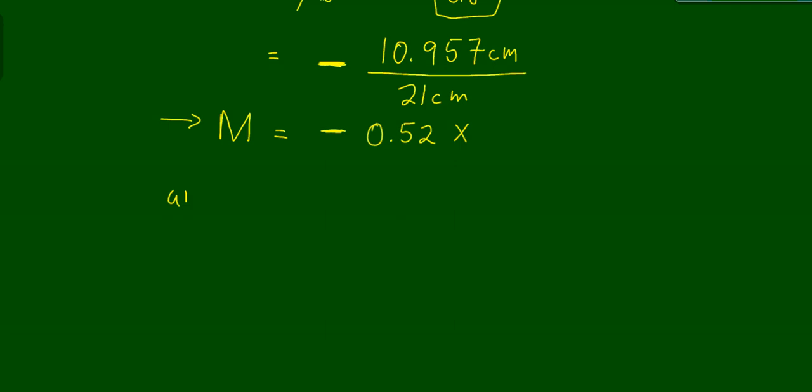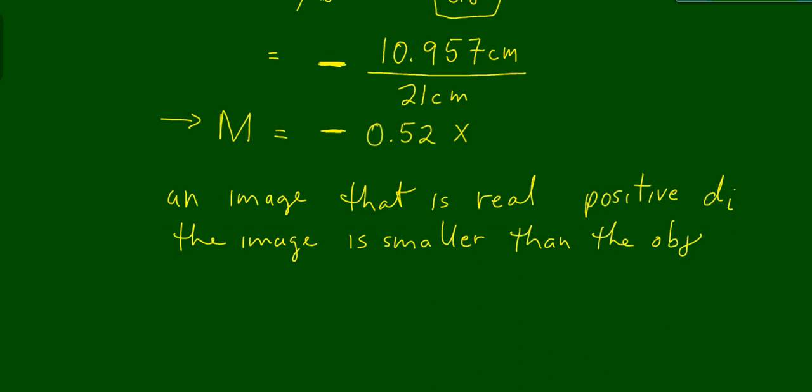What we have is an image that is real, as given by the fact that it had a positive image distance. The image is smaller than the object, as indicated by the fractional value. And the image is inverted relative to the original object.